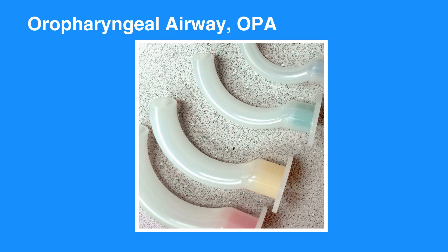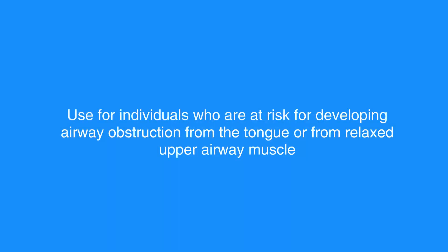The OPA is used in individuals who are at risk for developing airway obstruction from the tongue or from relaxed upper airway muscles. A properly sized and inserted OPA results in proper alignment with the glottis opening. If efforts to open the airway fail to provide and maintain a clear, unobstructed airway, then use the OPA.